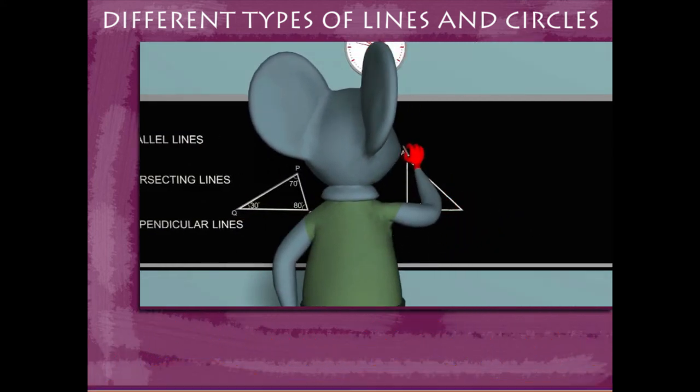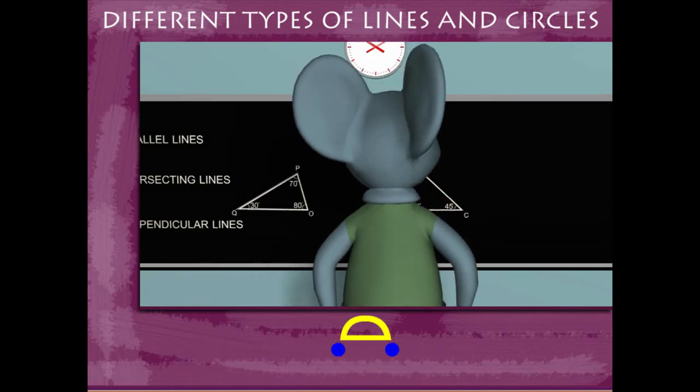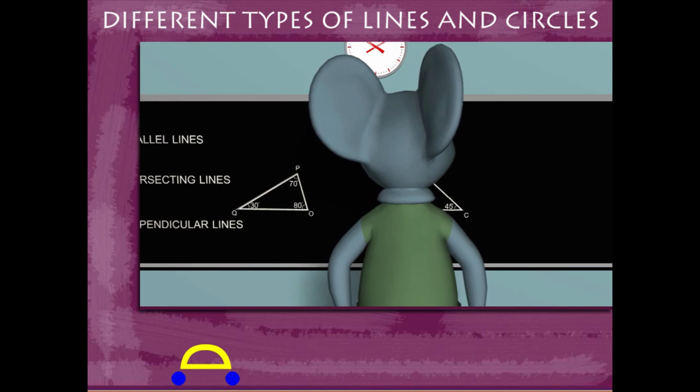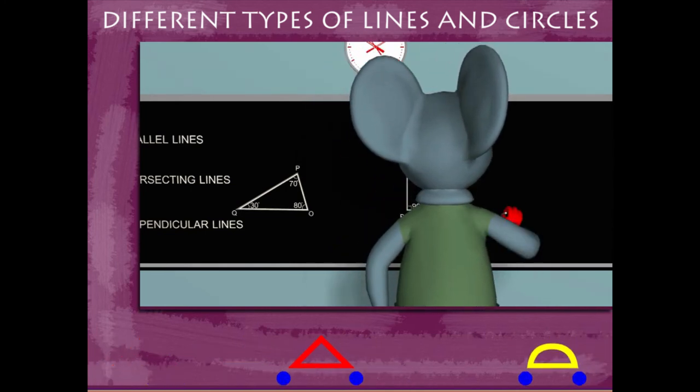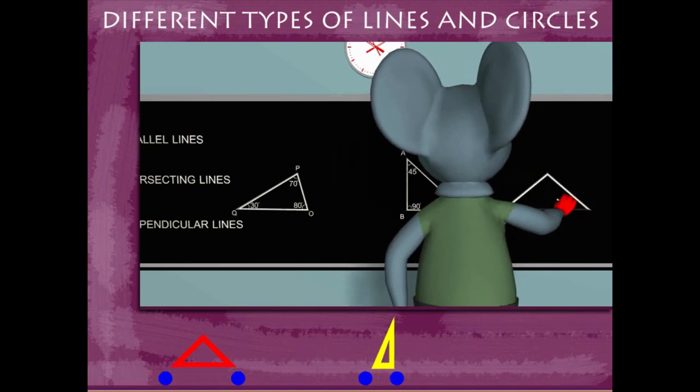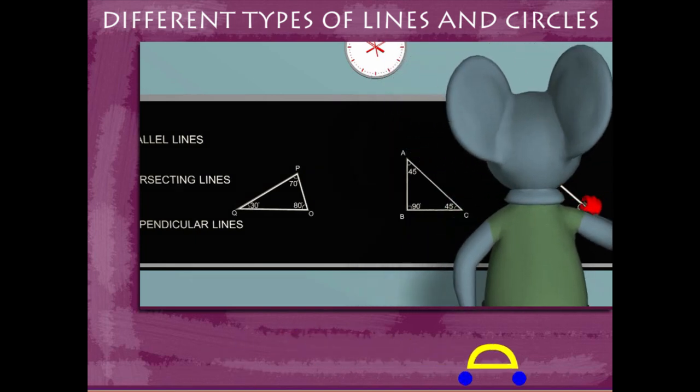The second triangle is called a right angled triangle with one angle being 90 degrees. The third triangle is called an isosceles triangle with two sides and two angles equal.